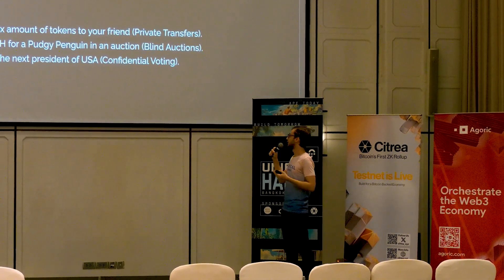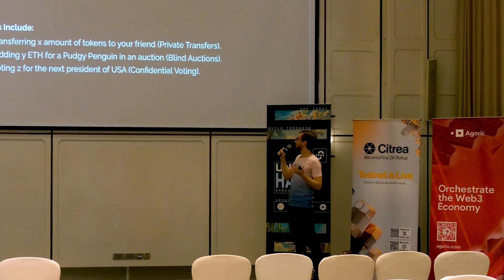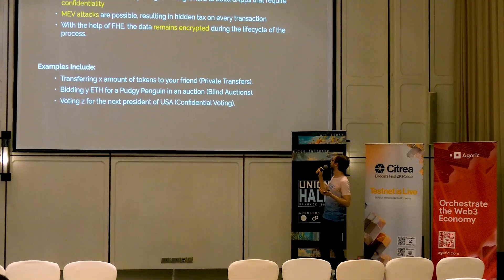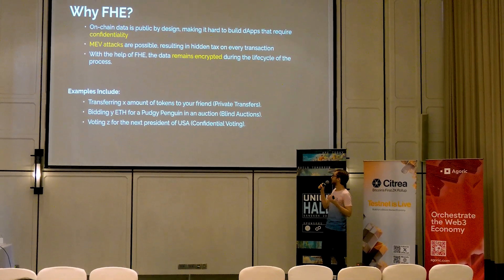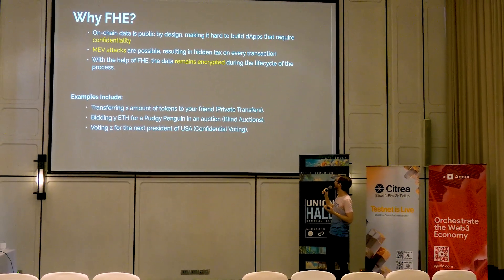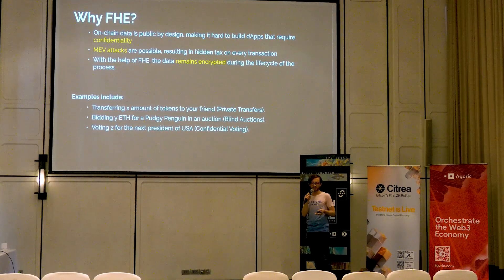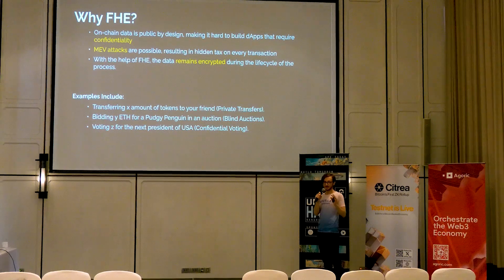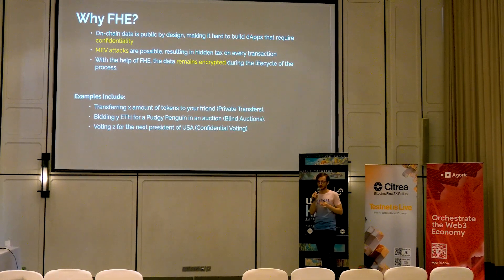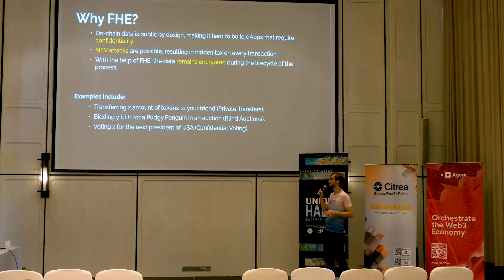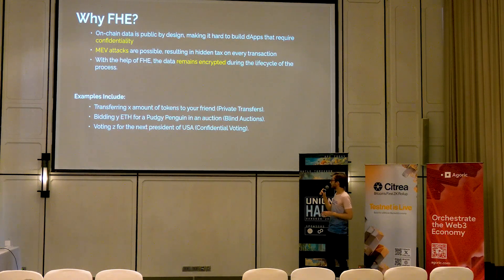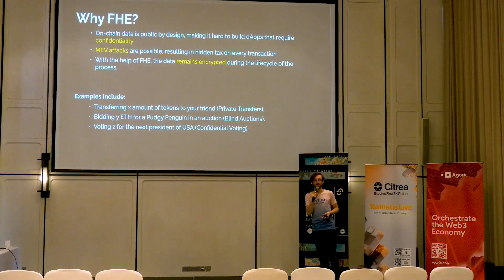So why are we using FHE? Why do we need it? Because on-chain data is public by design, making it hard to build apps that require confidentiality. And MEV attacks are possible, resulting in hidden attacks on every transaction. When you're sending a swap transaction on the mempool, it stays there and every MEV attacker can front-run you because they know the details of the transaction. With the help of FHE, the data remains encrypted during the lifecycle of the process, so you won't be able to get MEV attacked because they don't know anything about the transaction details.